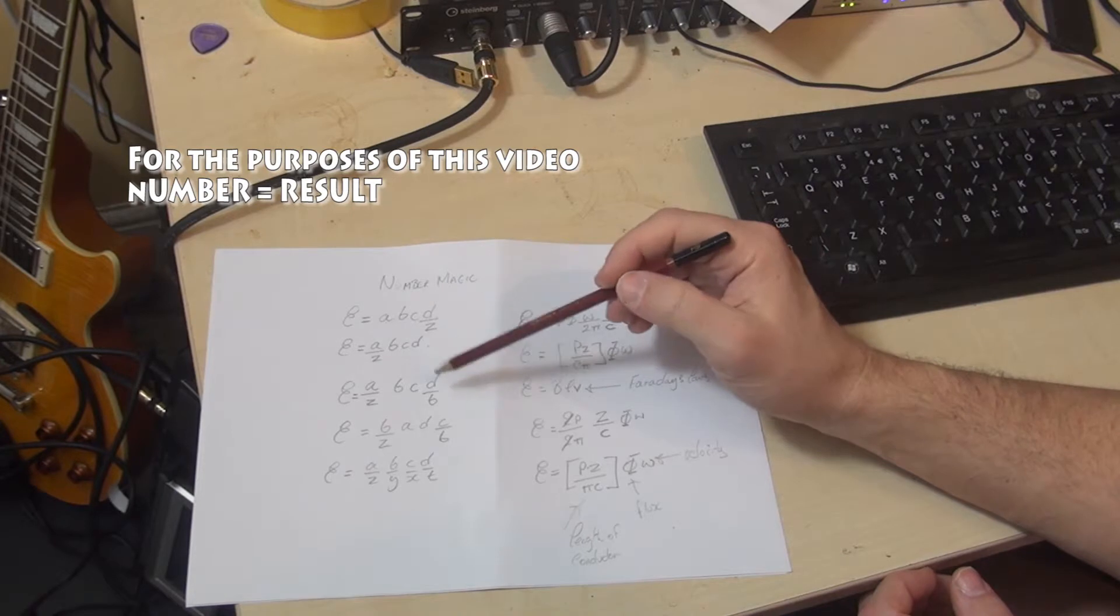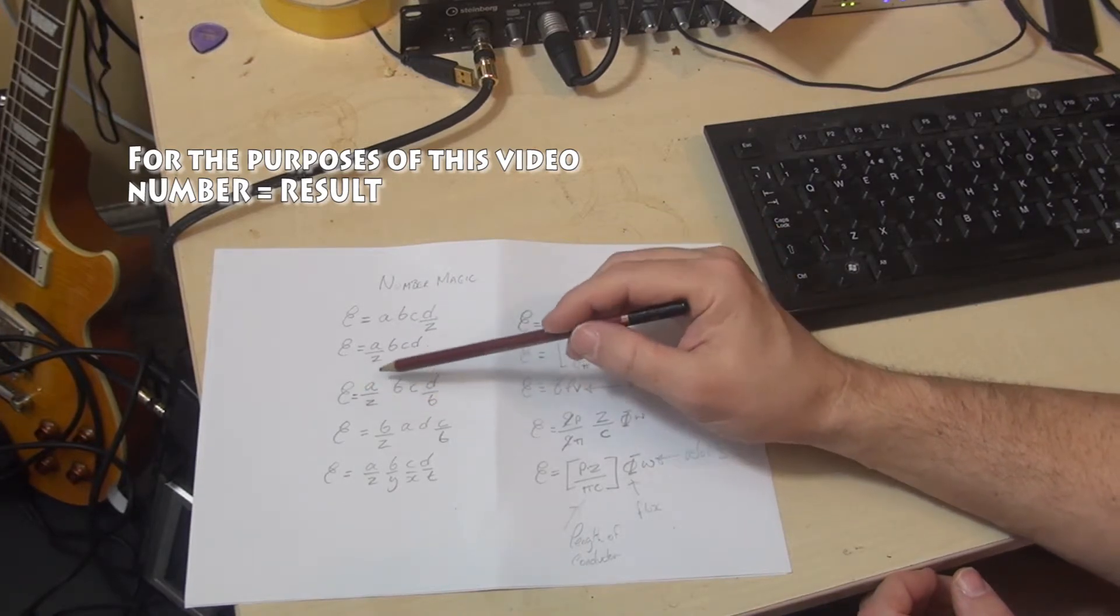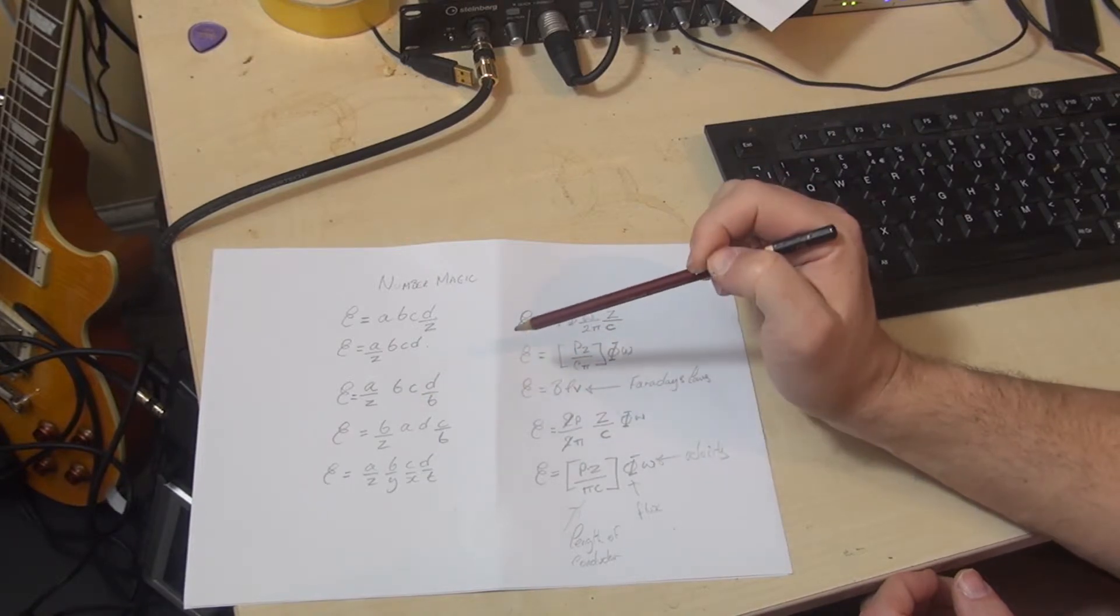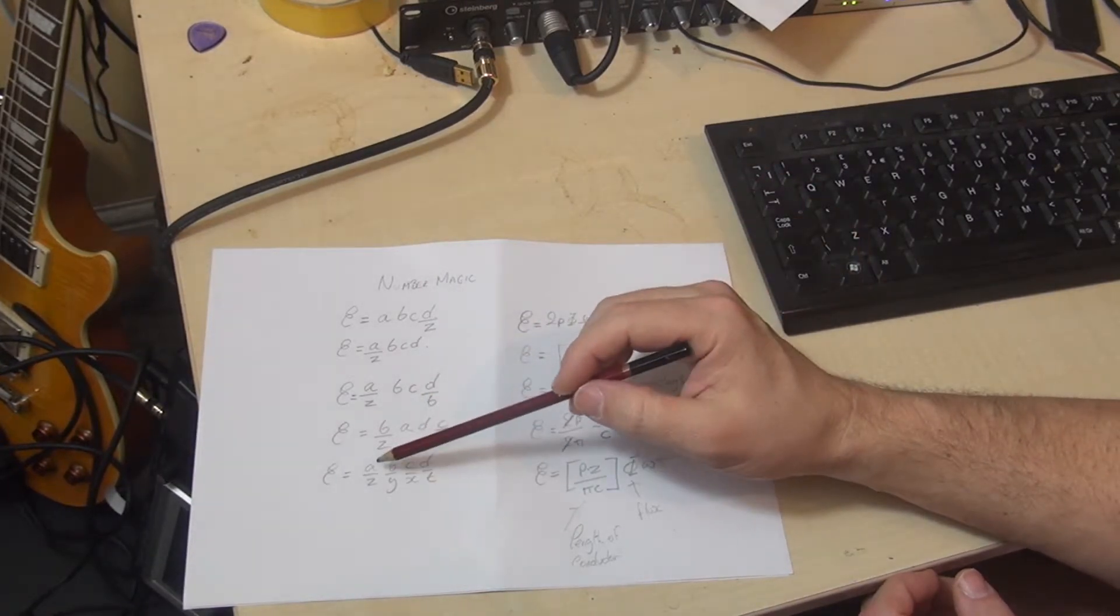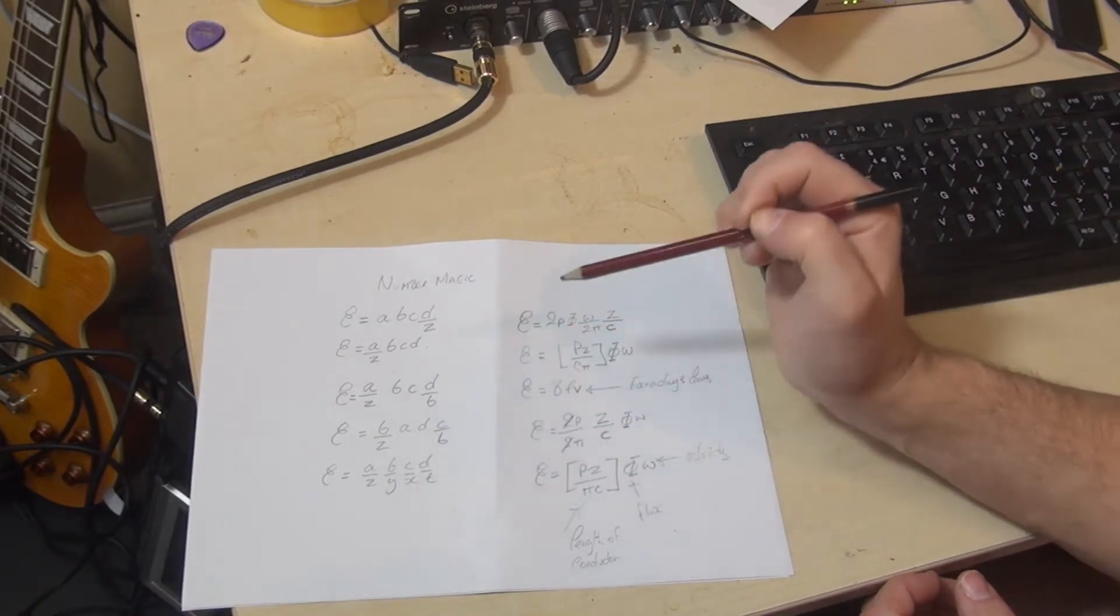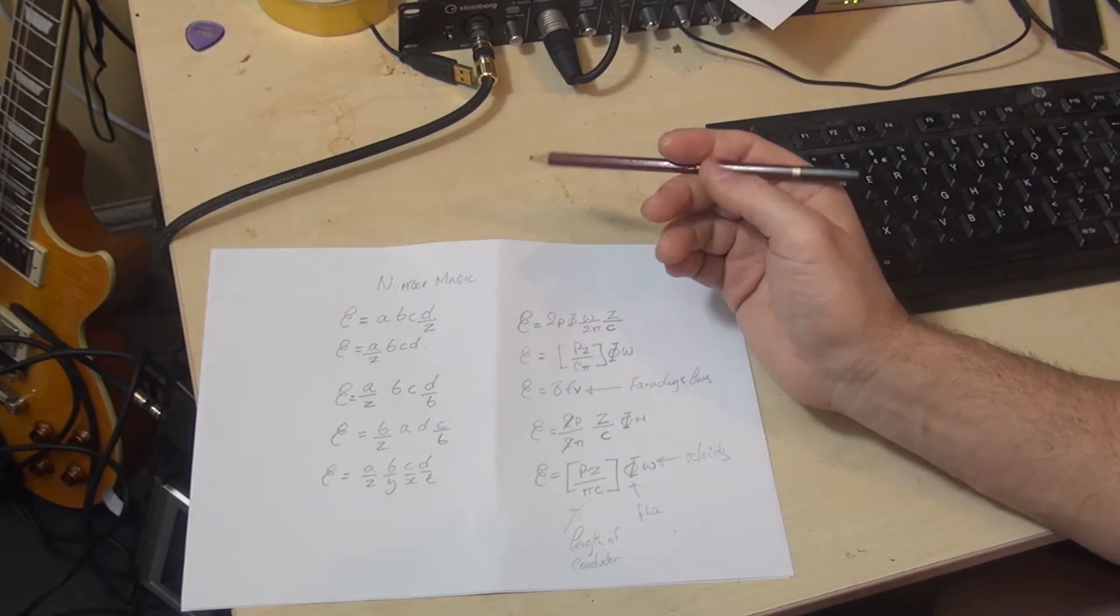It also turns out that we could, for example, have A over Z and D over B, and they would also be interchangeable. Or we could have a situation where we've got four fractions, and in every case a denominator can be swapped with another denominator, and we will still get the same answer.